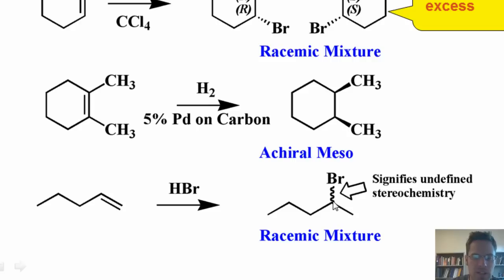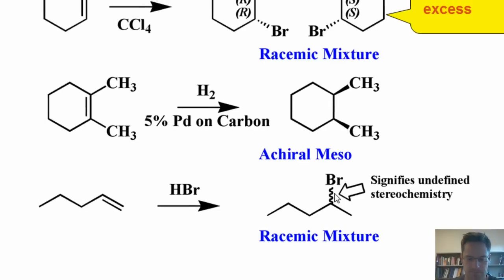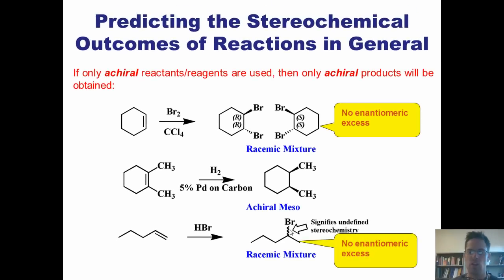We often indicate a racemic mixture by drawing a wavy bond. The wavy bond indicates that I have a completely 50-50 mixture of both enantiomers present. We would often report this by saying that there is no enantiomeric excess.